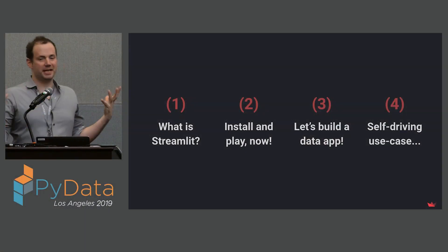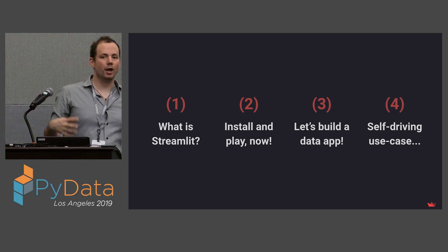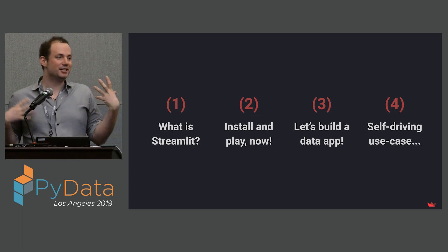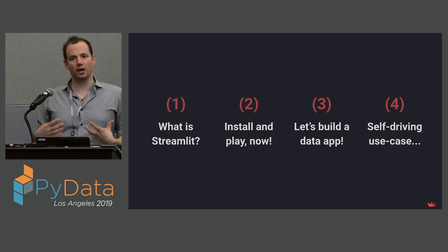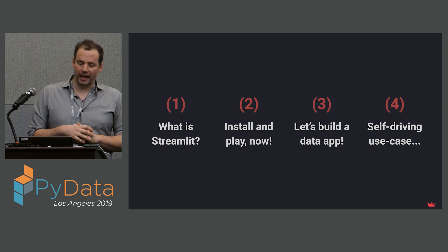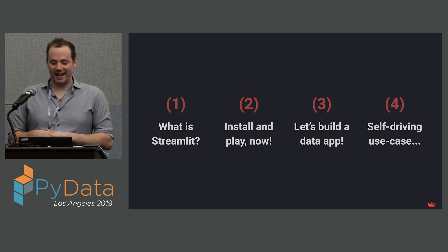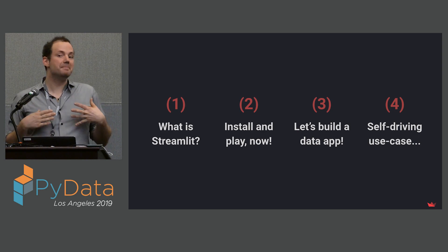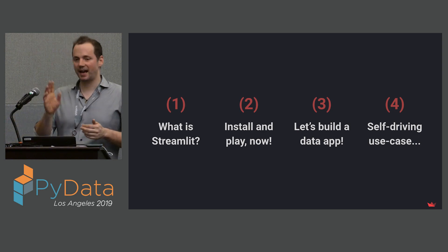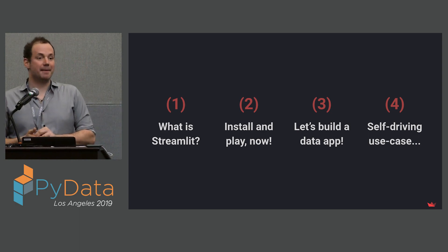The outline for today's talk — or today's demo really — is this. I'm going to first tell you a little bit about the space in the Python data and machine learning ecosystem that we see Streamlit filling, and the problem we're trying to solve. Then you guys are all going to be able to install it if you want and play with it. And then we're going to build a cool app. And then I'll tell you about some of the really deep motivating examples for building Streamlit.